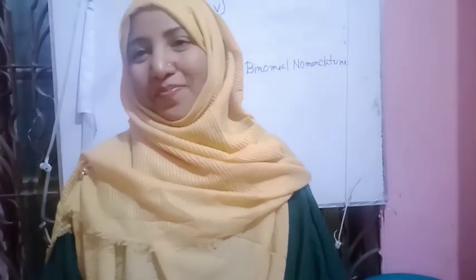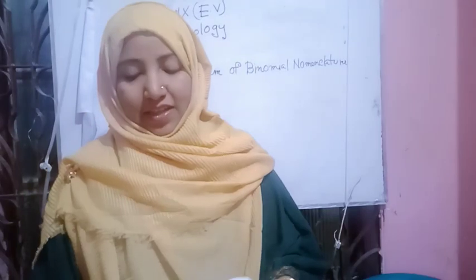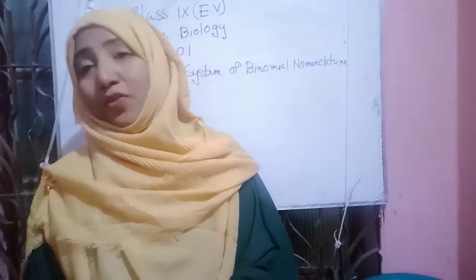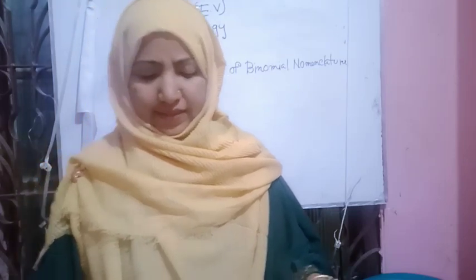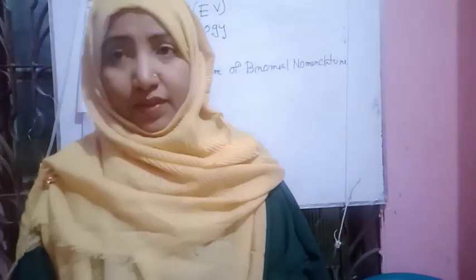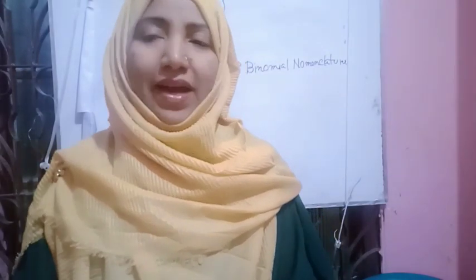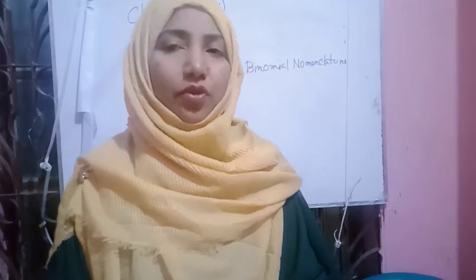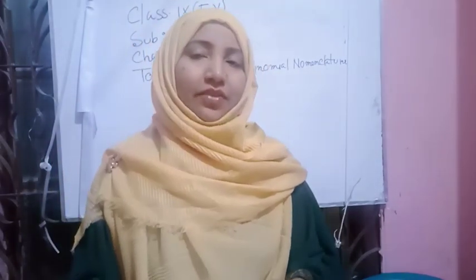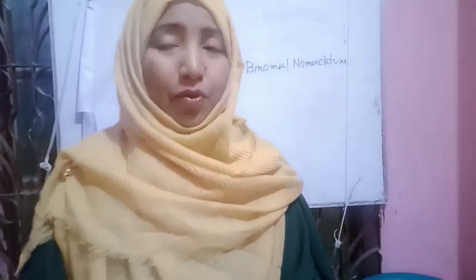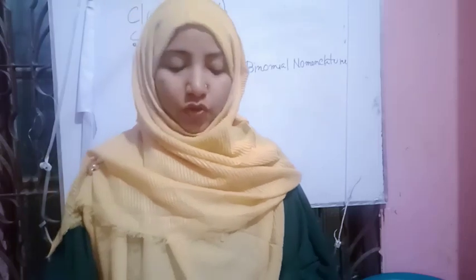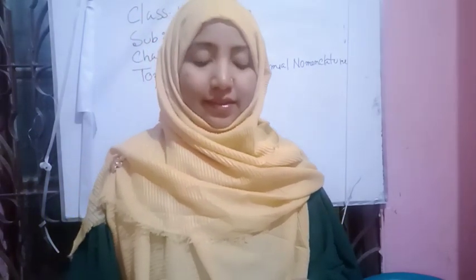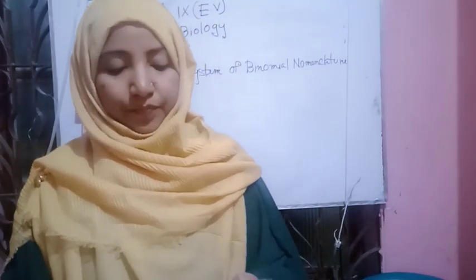Good morning, my dear students. Today our last topic is topic 1.5, chapter 11 — the system of binomial nomenclature. In the previous class we explained the different steps of classification and also about Homo sapiens. There are seven categories: phylum, class, order, family, genus, and species.